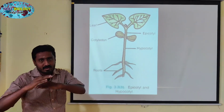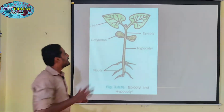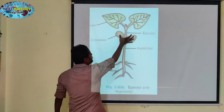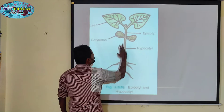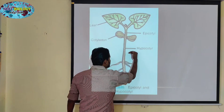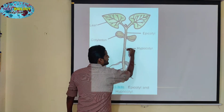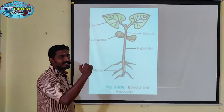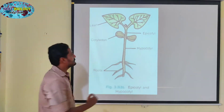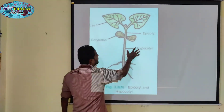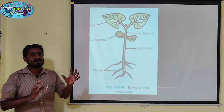Plumule, cotyledon, cotyledon epicotyl. Plumule, radical, root tip, cotyledon. So, dicotyledon — epicotyl.